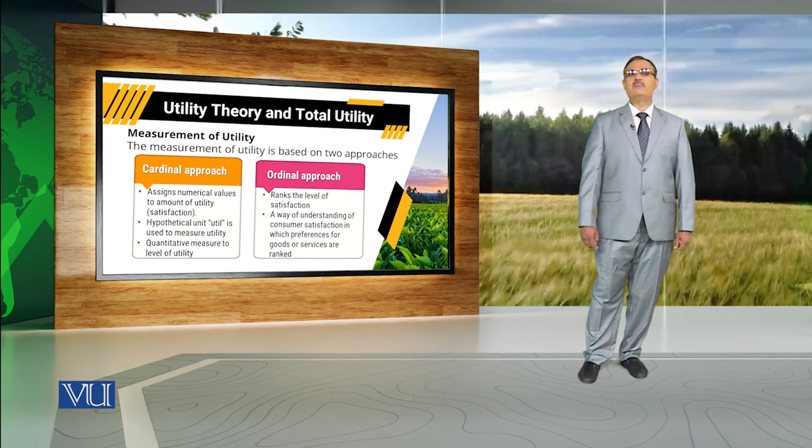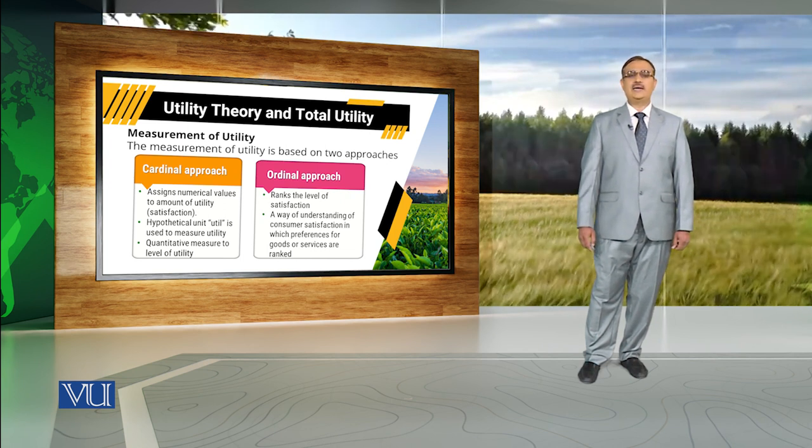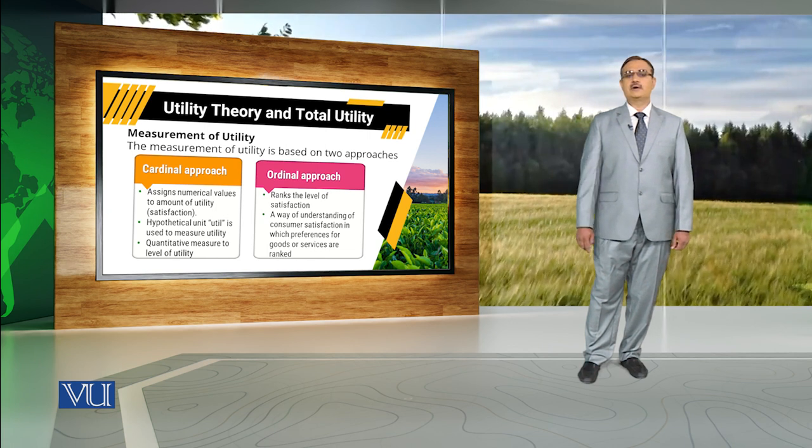Under the cardinal approach, we usually assign numbers to utility — to satisfaction. For example, if someone uses apples, we might say he is getting 20 units of utility. Classical economists used 'utils' as a measure of utility, just like we use meters to measure distance and kilograms to measure weight. When we measure utility numerically, we say we are measuring utility under the cardinal approach.